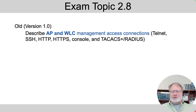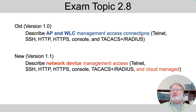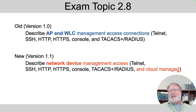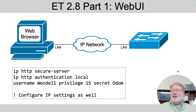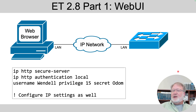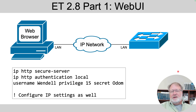Next up, exam topic 2-8. As a reminder, there's a change that expands the scope from wireless devices only to all network devices in CCNA, plus the phrase "and cloud managed" is added. So there are two changes because of the wording. The first change opens up the topic of how do you gain HTTP access to just a Cisco router and switch. It includes routers and switches now, with HTTP and HTTPS. I looked around and didn't find any CCNA-level great resources, so I decided to just teach it right here in this video.